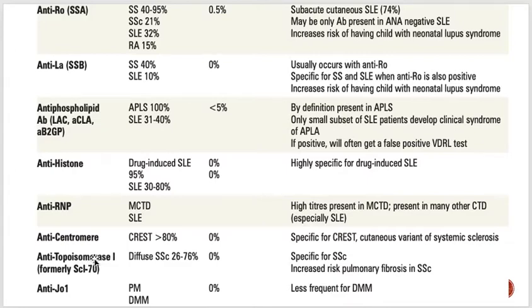Anti-topoisomerase antibodies are specific for diffuse systemic sclerosis — the systemic form, as opposed to CREST which is the cutaneous variant. When anti-topoisomerase antibodies are present, these patients tend to get more pulmonary problems, specifically pulmonary fibrosis.